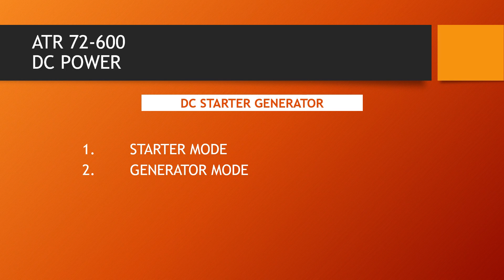Note: due to system component tolerance, the start sequence may end with displayed NH between 42% to 48%. In generator mode, when the engine reaches 61.5% NH, the starter generator starts generating usable DC output as a generator, provided the associated DC generator push button is selected on and external power is deselected.